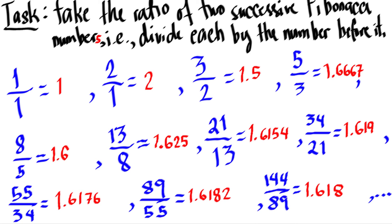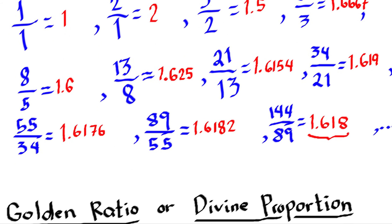Now we want to observe what is happening with the ratios. Notice: first we have 1, second we have 2, third 1.5, then 1.6667, then 1.6, then 1.625, then 1.6154 — and after that we can see we're stuck with 1.61. Then 1.6190, 1.6176, 1.6182, and we're stuck with 1.618 after that. If you continue, you're going to see numbers very, very close to 1.618.